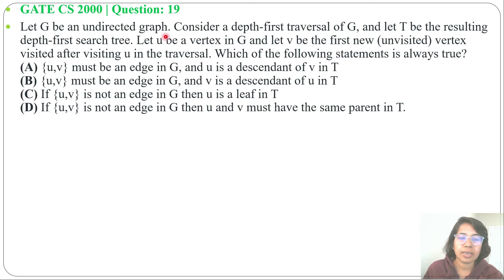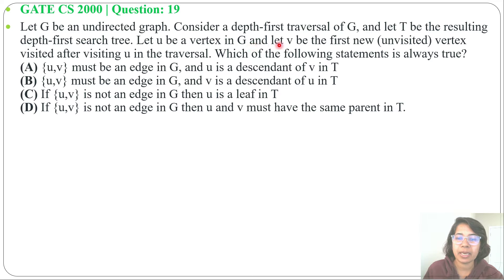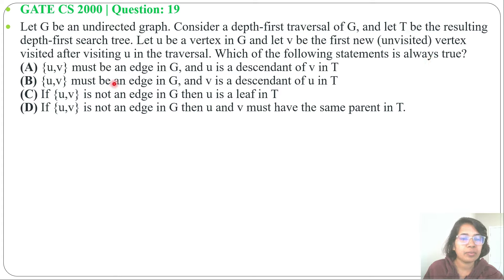Let G be an undirected graph, consider a depth-first traversal of G, and let T be the resulting depth-first search tree. Let U be a vertex in G, and let V be the first new unvisited vertex visited after visiting U in the traversal. Which of the following statements is always true? Four options are given.